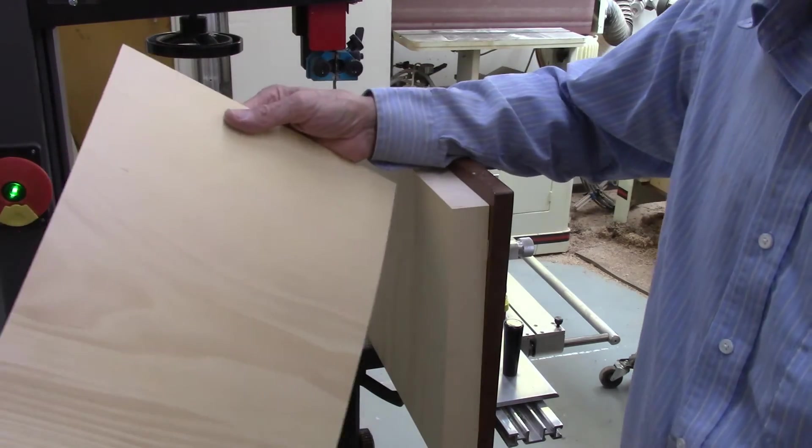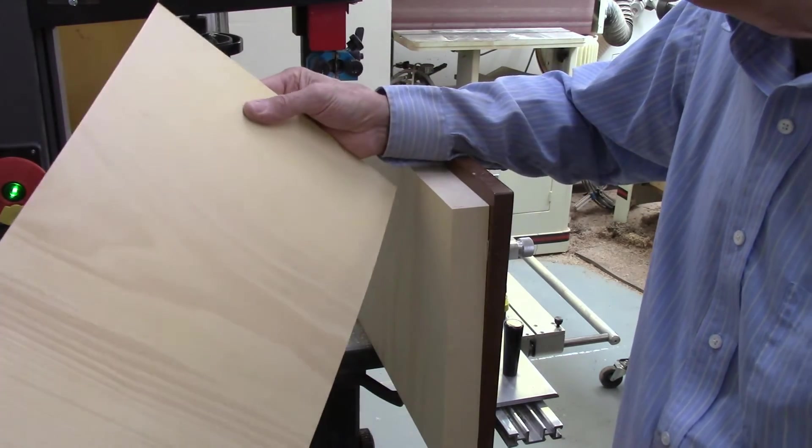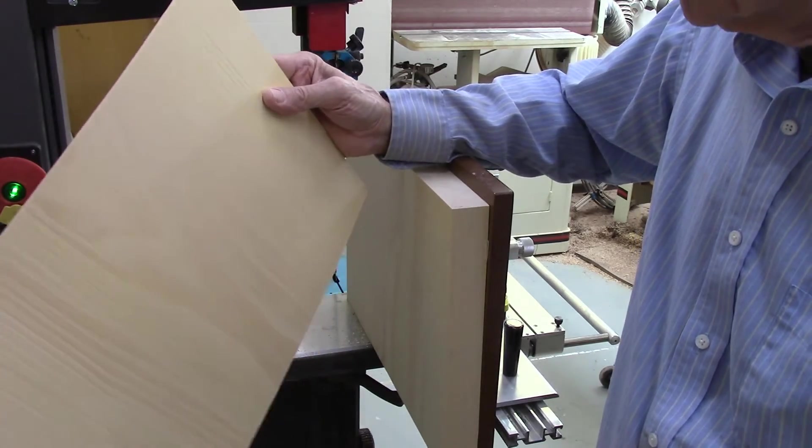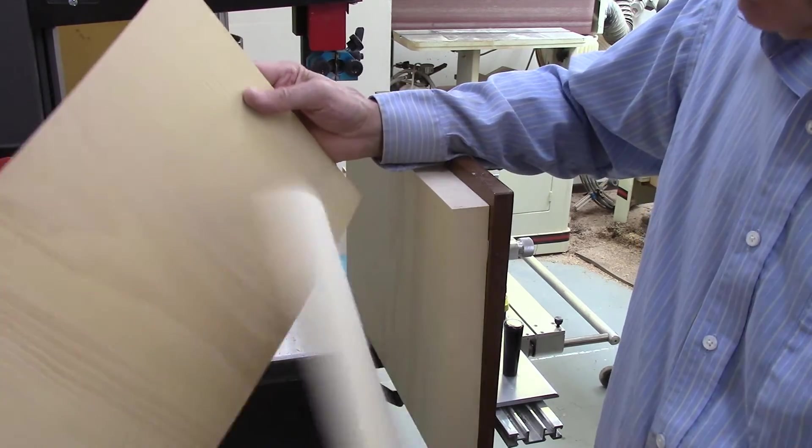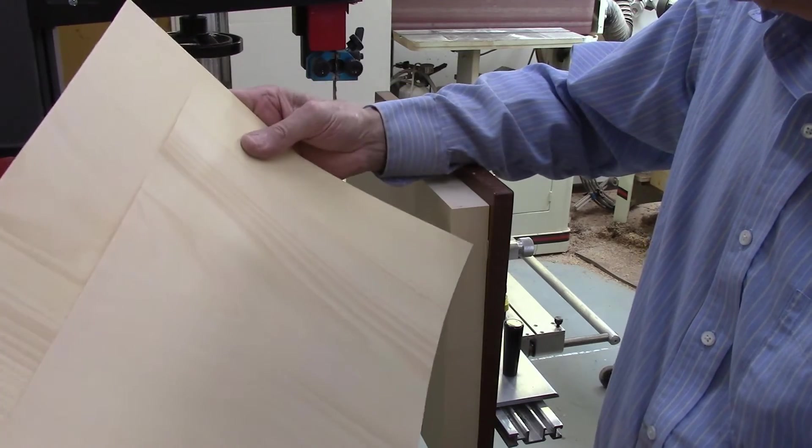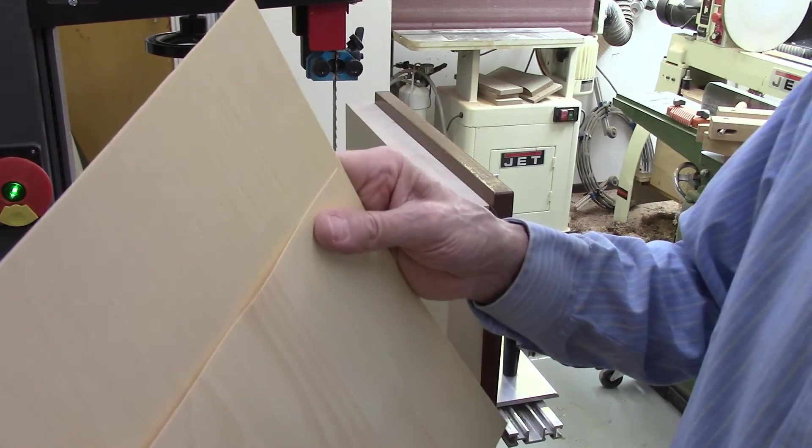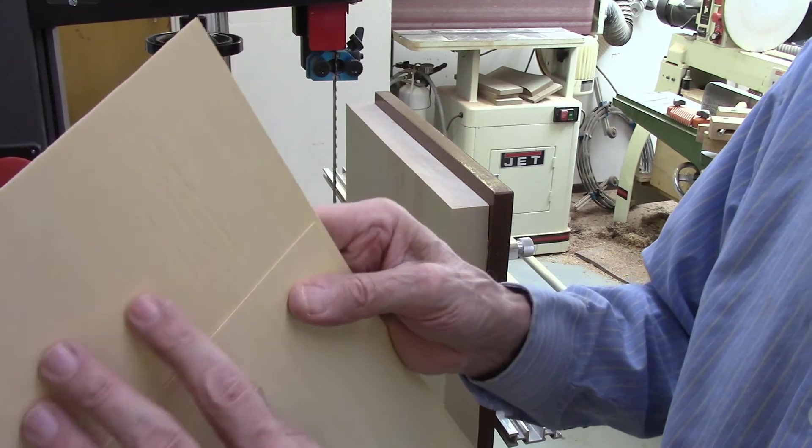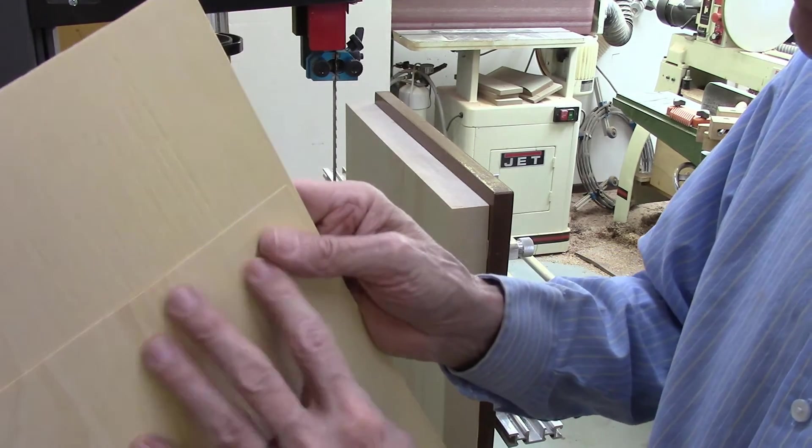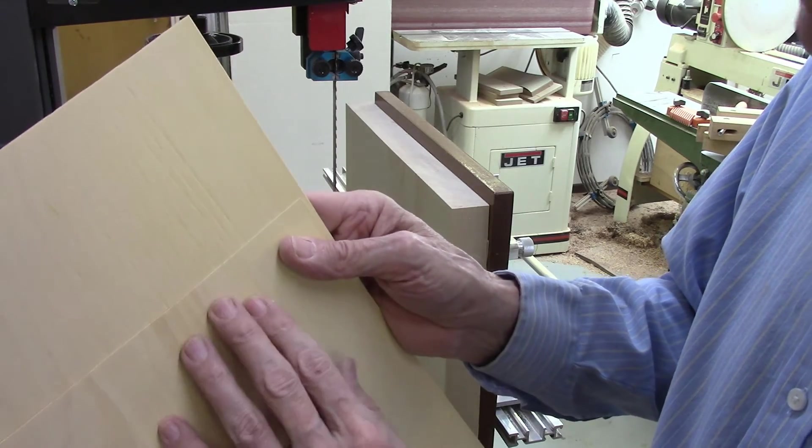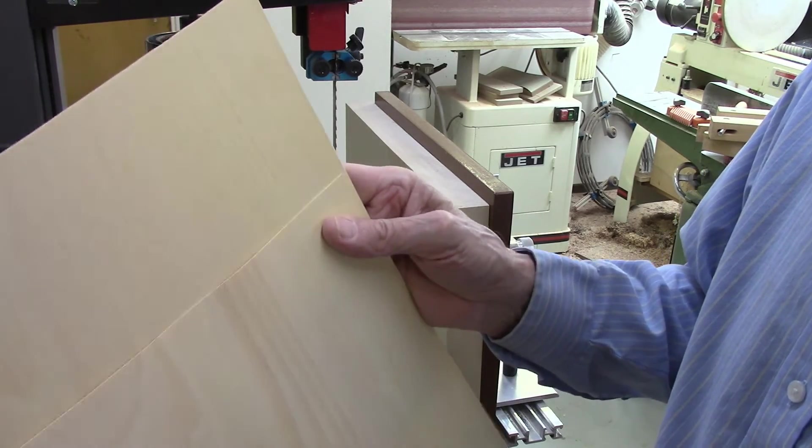So that's the board that came off the carbide tooth blade, not nearly as smooth as the rig tooth blade. In fact, this is a previous cut with the eight teeth per inch rig tooth blade. I don't know if you can see it in the video, but there's a definite difference. So this blade is coming off my bandsaw. I don't plan on using it again.